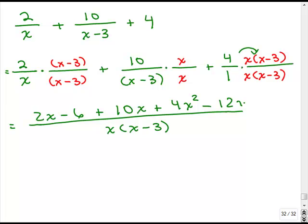And we still have to finish simplifying the numerator. So there's only one x squared term, the 4x squared. And let's see, I've got 2x plus 10x, which is 12x, and I've got a minus 12x. Oh, so those are gone. And I have a minus 6, all over x times x minus 3.